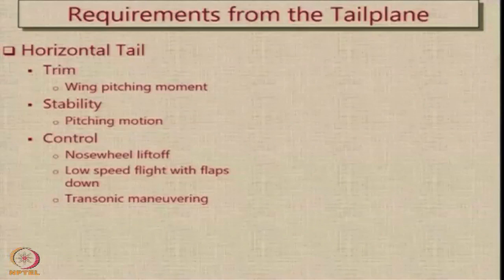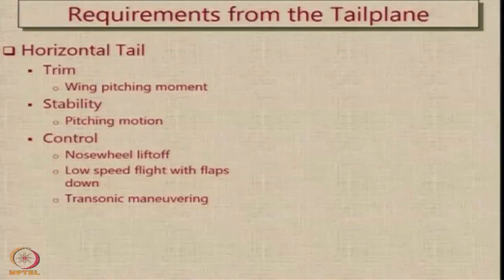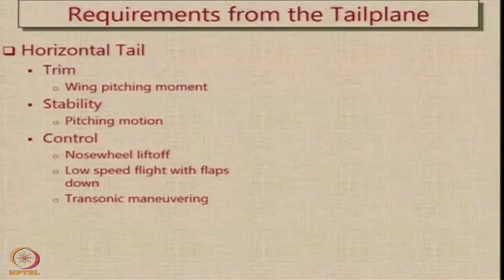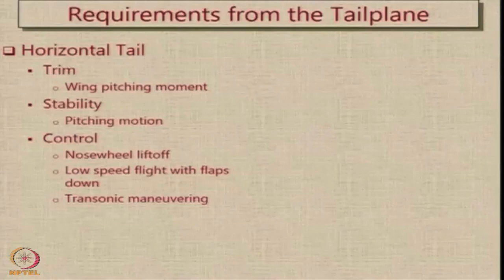For example, during takeoff, we would like the nose wheel to lift off from the ground when the pilot makes the aircraft travel beyond a particular speed called the takeoff rotation speed. When you have low speed flight with flaps down, there is a huge amount of pitching moment created, generally nose down, and this has to be countered by the deflection of the horizontal tail. We also need the horizontal tail for additional moments created during transonic maneuvering.